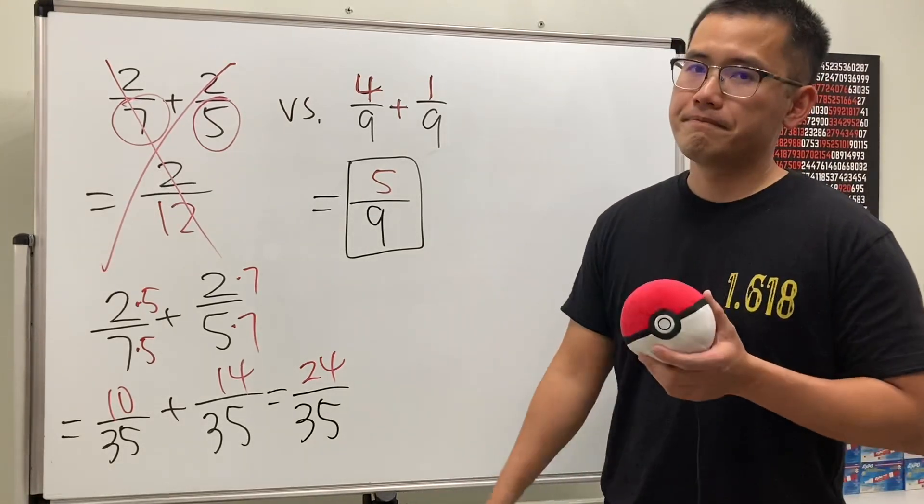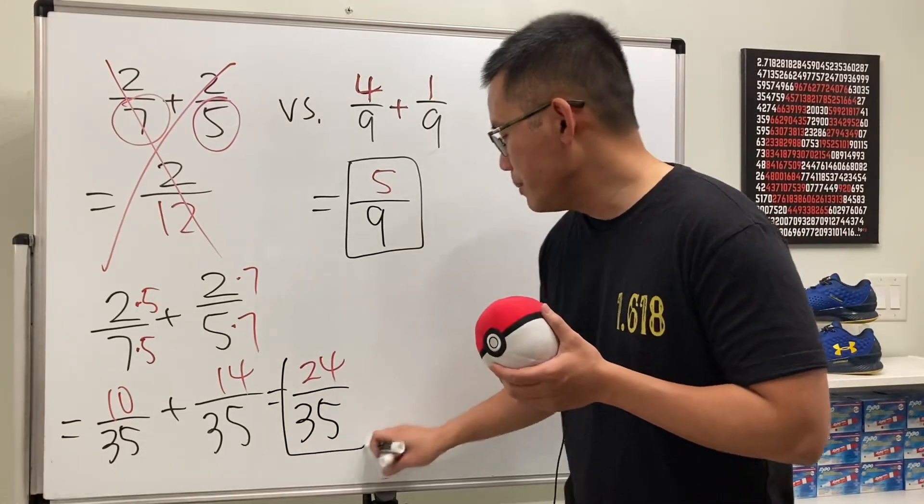And then look, 24 over 35. Can we reduce it? Can we find a number that goes into this and that? No. So again, this right here will be the answer. This right here will be the answer, which is how to box it. So that's pretty much it.